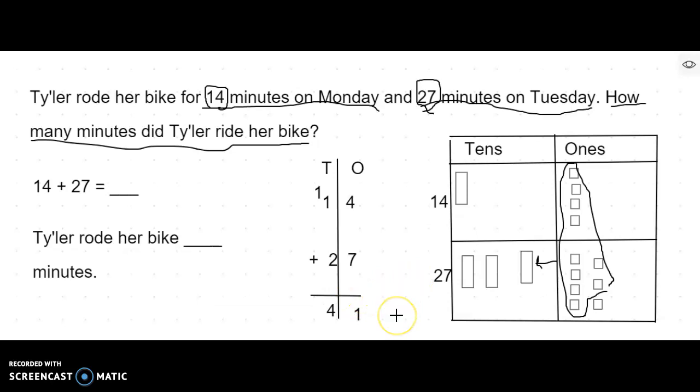So that means I add this with four 10s and one one, which means how many minutes did Tyler ride her bike? Yeah, she rode her bike for 41 minutes. Four 10s and one is 41. 14 plus 27 is 41.